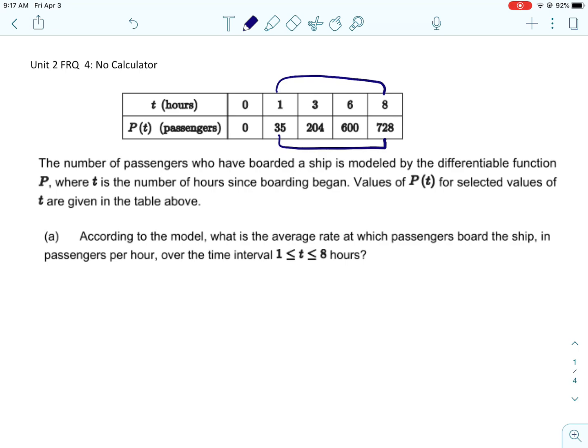Alright, so we're going to find the average rate of change again. We're going to find the average rate of change using the table on the interval from 1 to 8. All the stuff in between 1 and 8 doesn't matter. What's before 1 doesn't matter. We're just going to use those two coordinates.